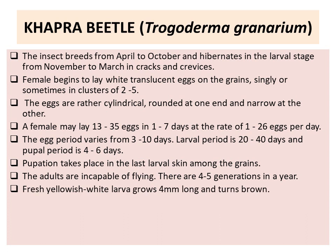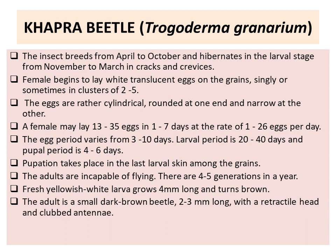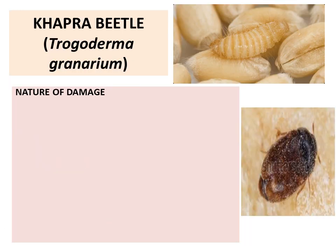Fresh yellowish-white larva grows to 4 mm long and turns brown. The adult is a small dark brown beetle, up to 3 mm long, with a retractile head and clubbed antennae. The entire body is clothed with fine hairs.